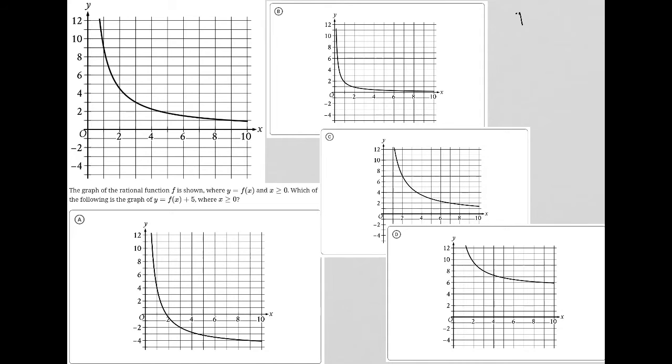So this question is a diagram question. I had to break up all of the answer choices here just so we can see them all on a single screen. We have choice A here, that graph, choice B's graph, choice C's graph, and choice D's graph. Our original question's graph is here.